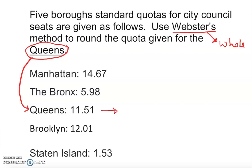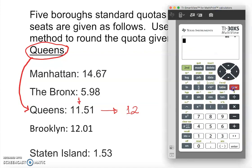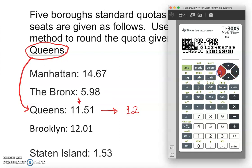So how do you round to the whole number? The whole number is basically this one down here. So 11.51 — the whole number rounds to 12. That's all we do basically. Or you can use a calculator. If you have some issue with rounding, go to mode, go to the floor, and round to the whole number, which is 0.